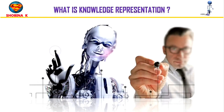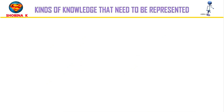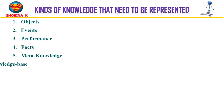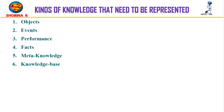Knowledge representation in AI is not just about storing data in a database — it allows a machine to learn from that knowledge and behave intelligently like a human being. There are different kinds of knowledge that need to be represented in AI, such as objects, events, performance, facts, meta knowledge, and knowledge base.